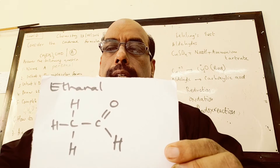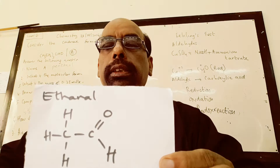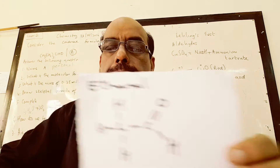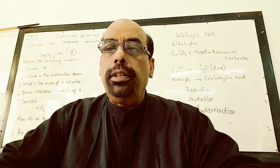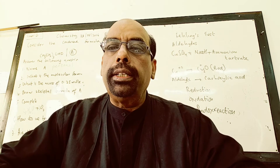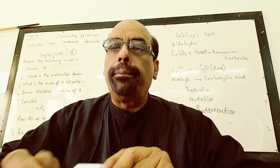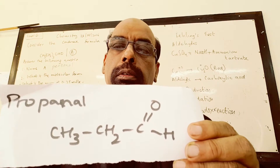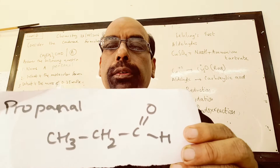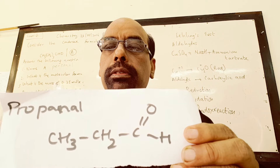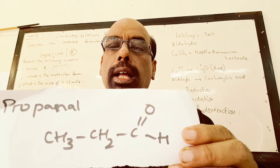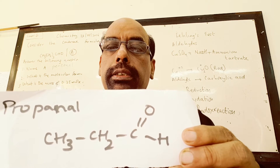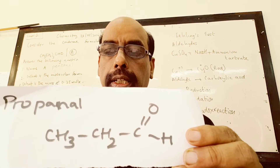Ethanal is an aldehyde because it contains the aldehyde group. Another example of an aldehyde is propanal — 'prop' because there are three carbon atoms, 'al' because it is an aldehyde and contains the aldehyde group.